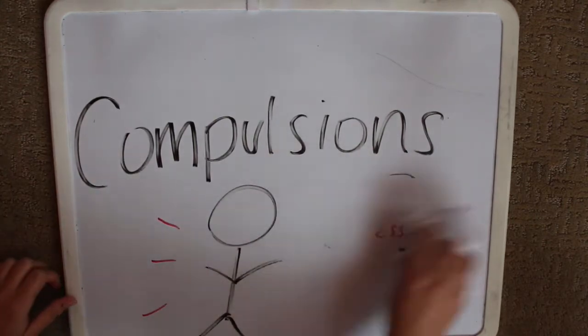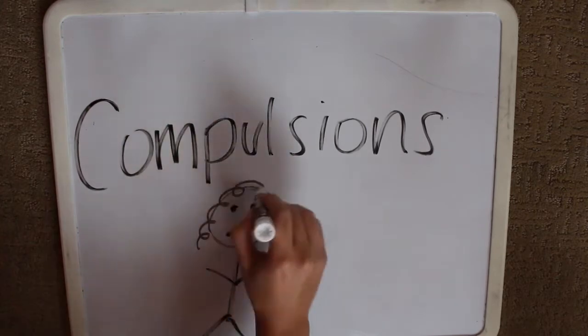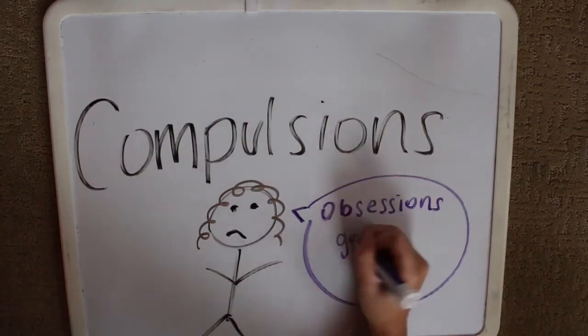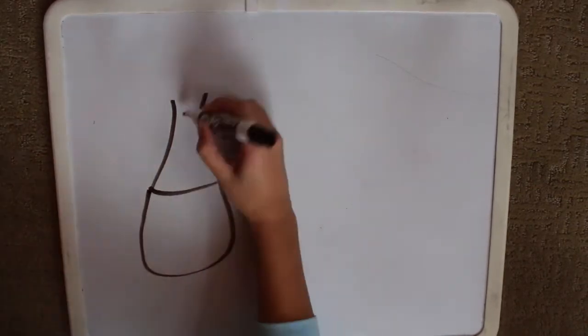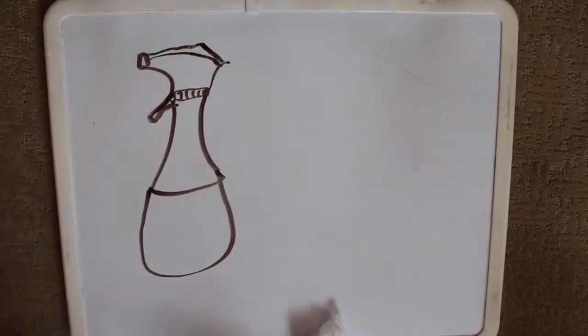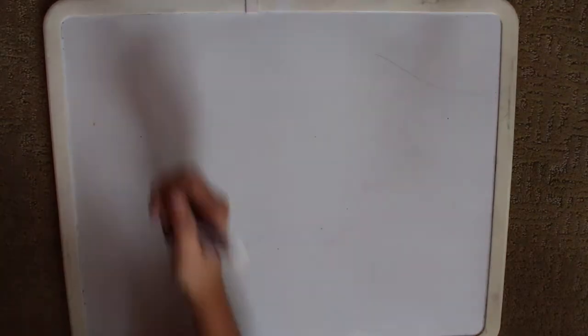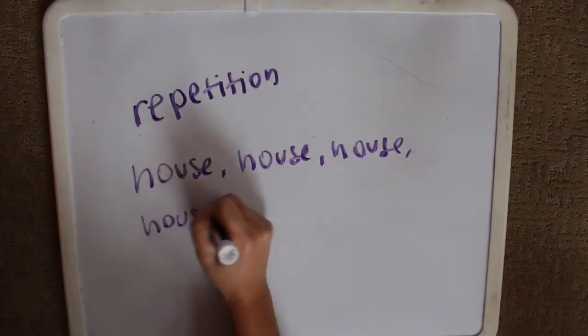Additionally, compulsions are repetitive behaviors or thoughts a person uses with the intention of counteracting or making their obsessions go away. Common compulsions include washing and cleaning, rearranging objects, repeating or rewriting multiple times until it feels right, and symmetry or exactness.